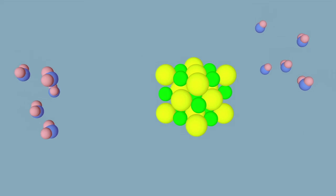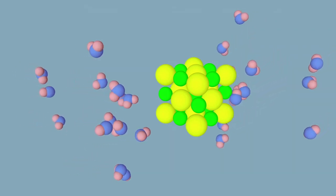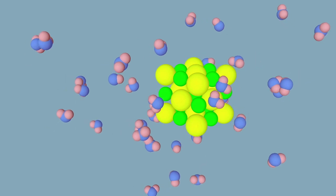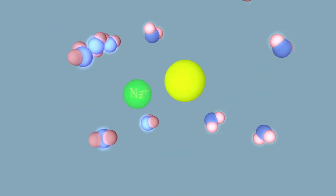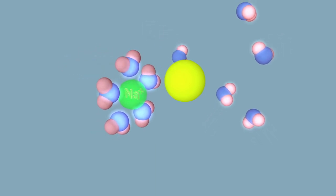Now what happens when molecules of water are in front of a crystal salt? Well, the oxygens will surround the positive ions and the hydrogens will do the same with the negative ions.